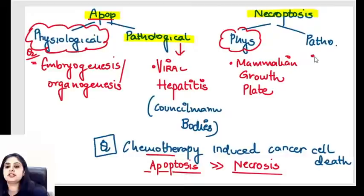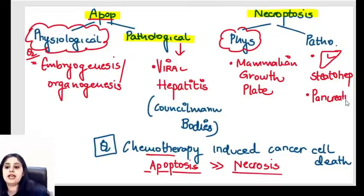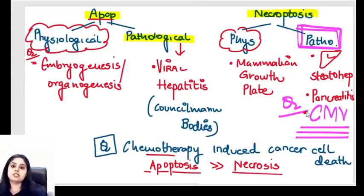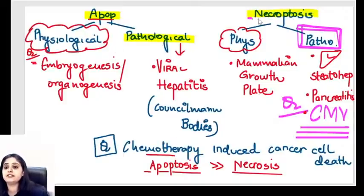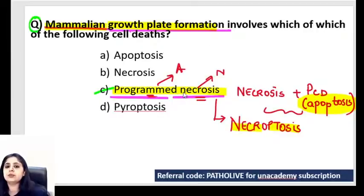For pathological necroptosis: in the liver - steatohepatitis. In the pancreas - pancreatitis. And a virus from Robbins 10th edition that is killed by necroptosis - cytomegalovirus. That's a very much expected exam question. The examiner will write it as 'programmed necrosis' instead of necroptosis - mammalian growth plate formation: programmed necrosis.